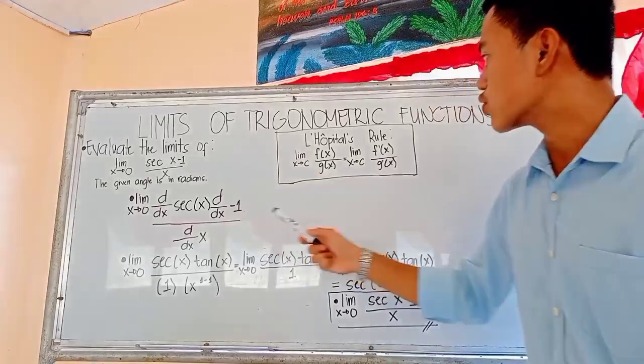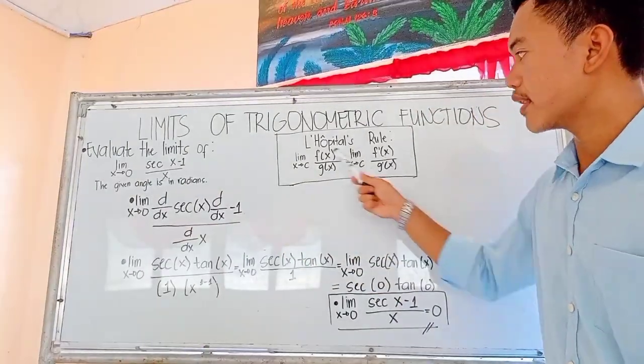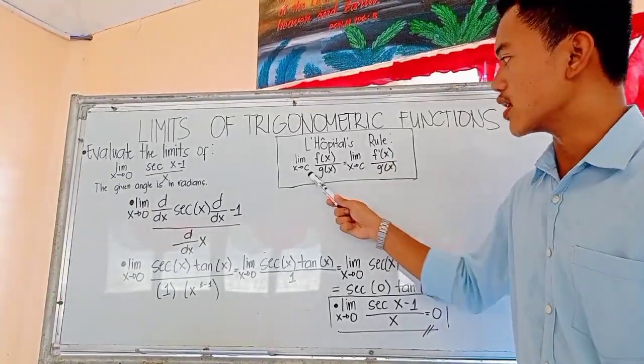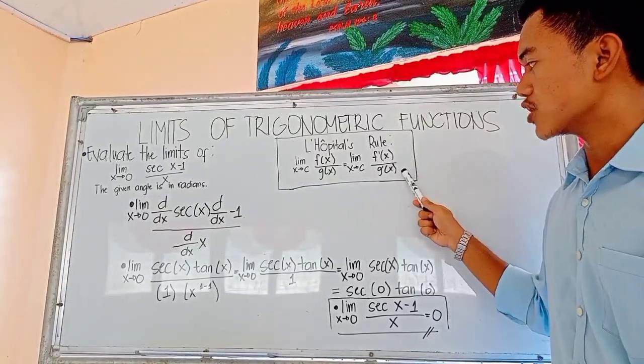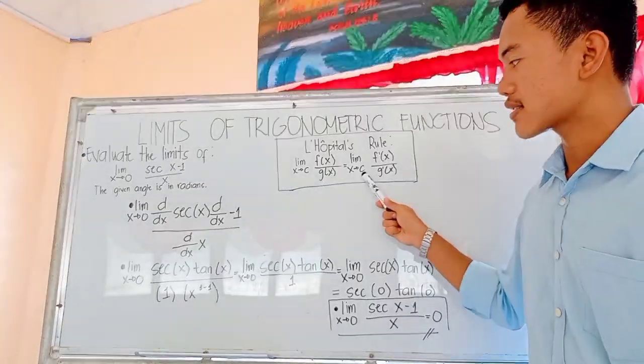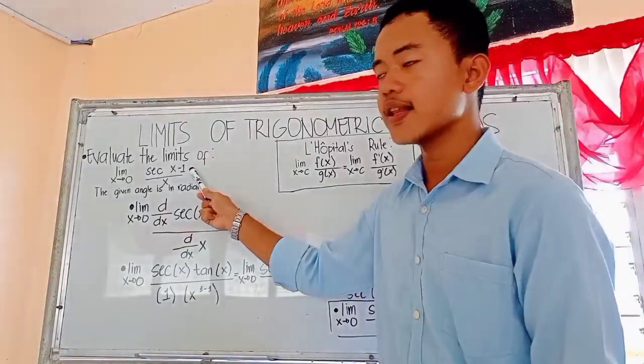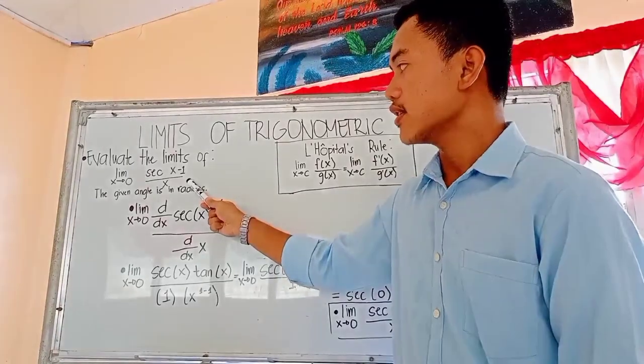So we need to use L'Hopital's rule. According to this rule, the limit of f of x over g of x as x approaches to c is equals to the limit of f prime of x over g prime of x as x approaches to c. So basically, we need to find the derivative of the numerator and the derivative of the denominator.